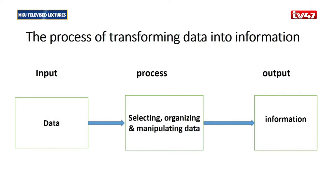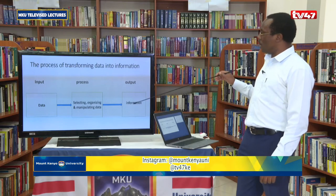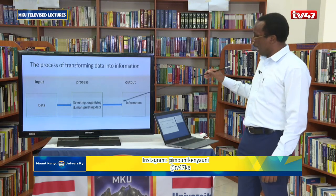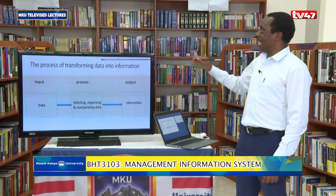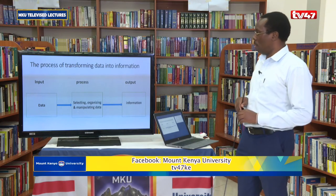I want us to look at the process of transforming data into information. When you talk about data, we look at it as an input — these are raw facts that have not been processed. A destination manager cannot make decisions from raw data. But when that data is processed through selecting, organizing, and manipulating, then you get information. We make decisions out of information that has been processed. That process is called the transformation of data into information.